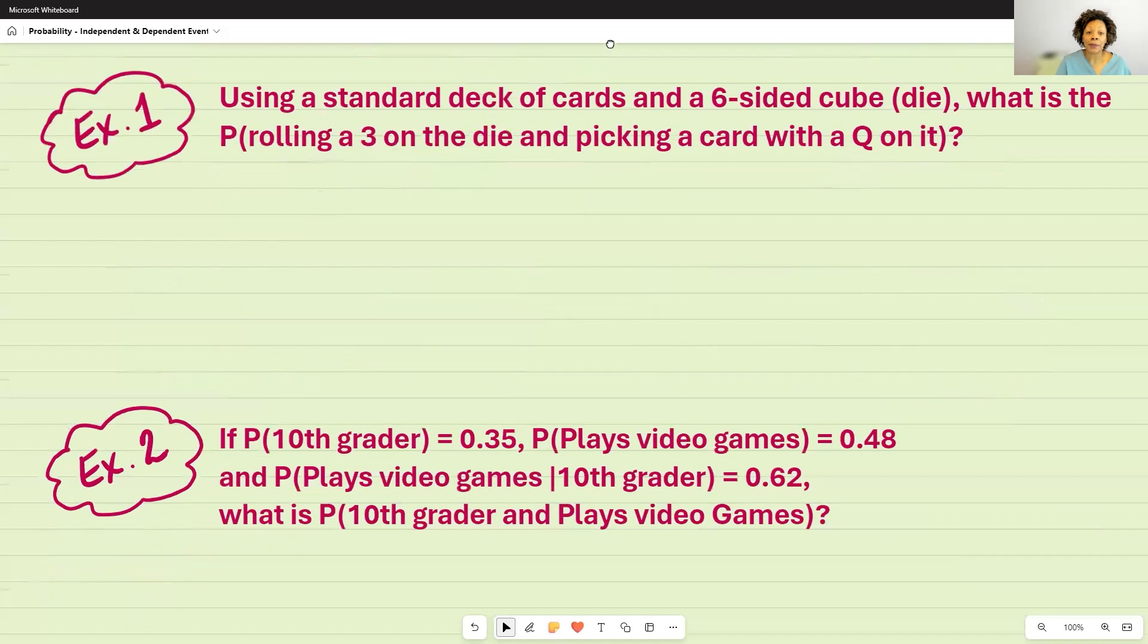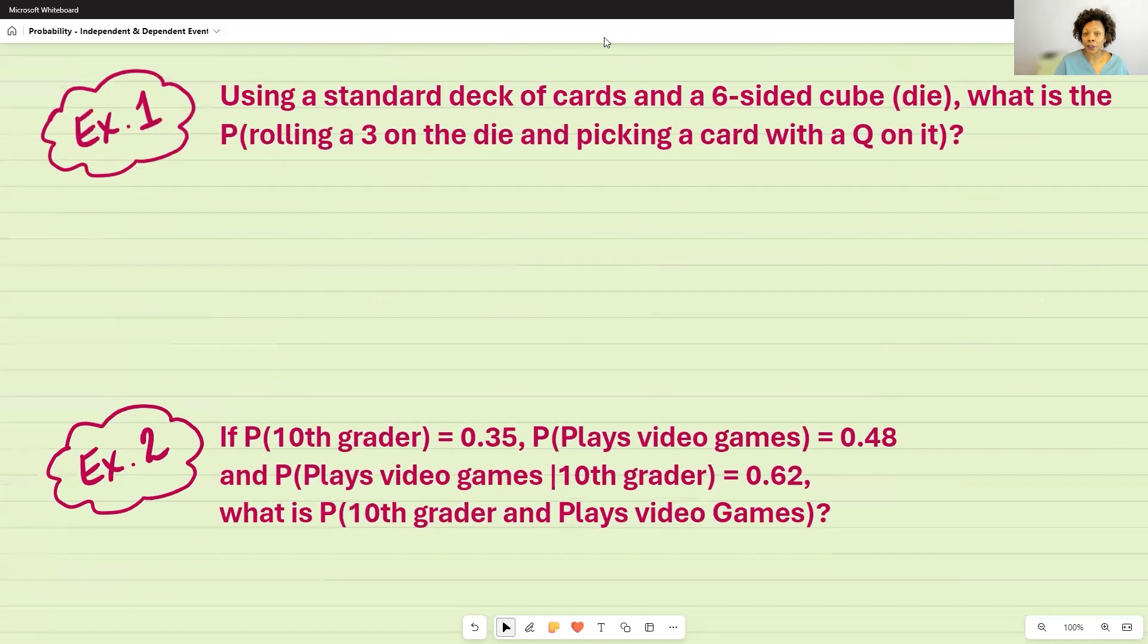For example one, I'm using a standard deck of cards, which has 52 cards in it, and a six-sided cube, which we know as a die. And that just is a singular version of dice. Dice is more than one of those cubes, and it has six sides.